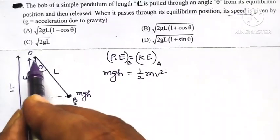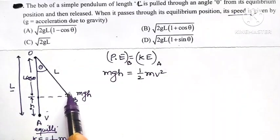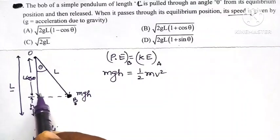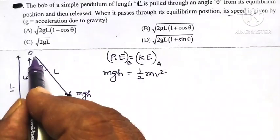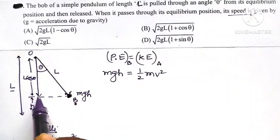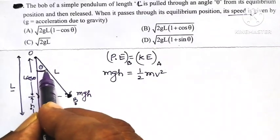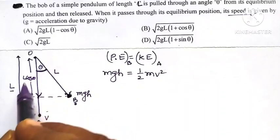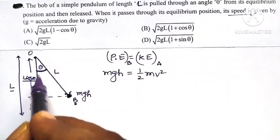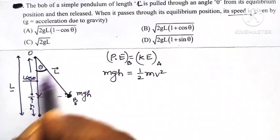The length of the string can be resolved into two components. The component that makes an angle theta with length L is L cos theta.